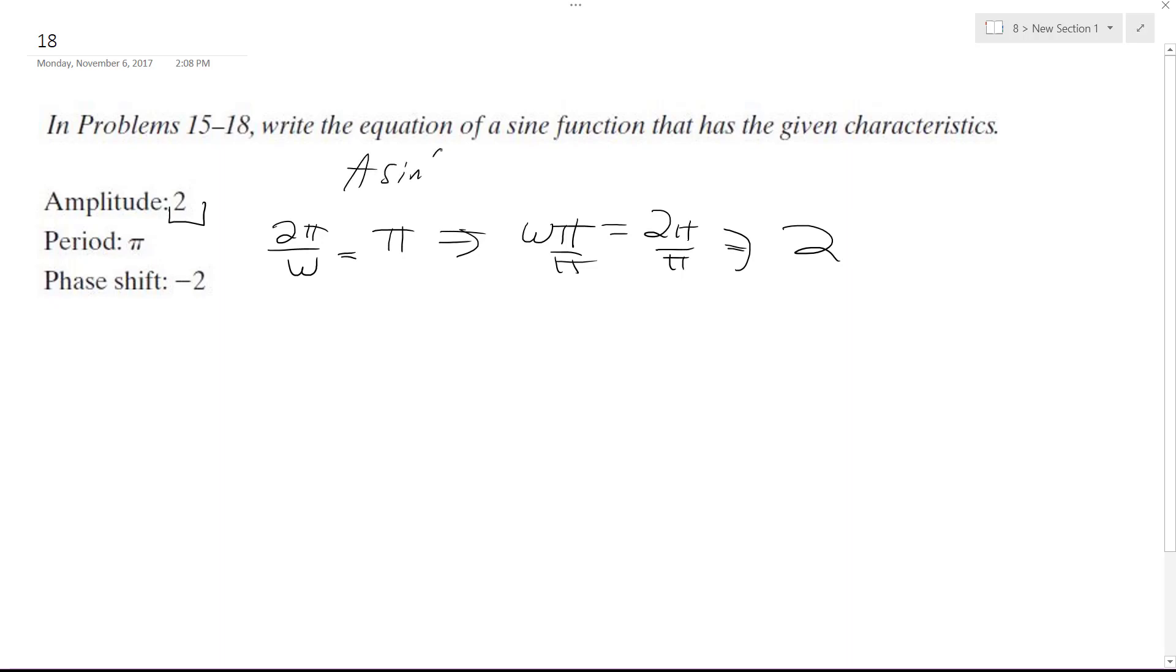Well let me just write out so I need to come up with something like this. Then phase shift, PS, I just labeled that abbreviation, so I get negative two is equal to theta divided by omega, and I have omega which is two. So I get theta over two is equal to negative two, multiply, I get theta is equal to negative four.